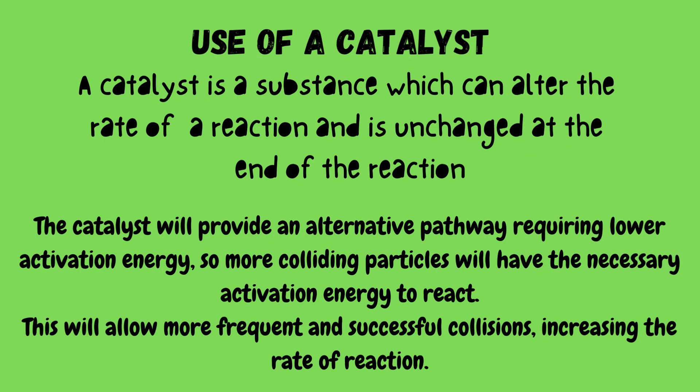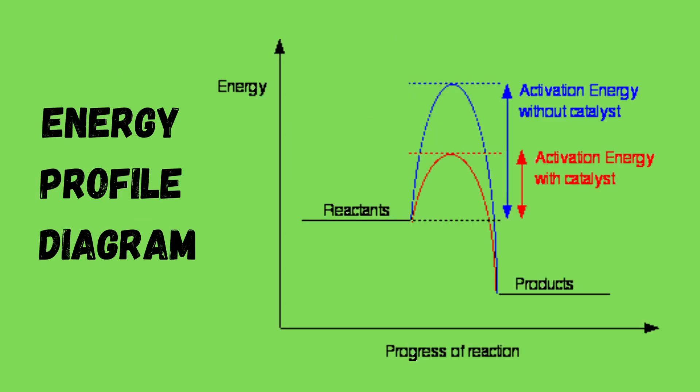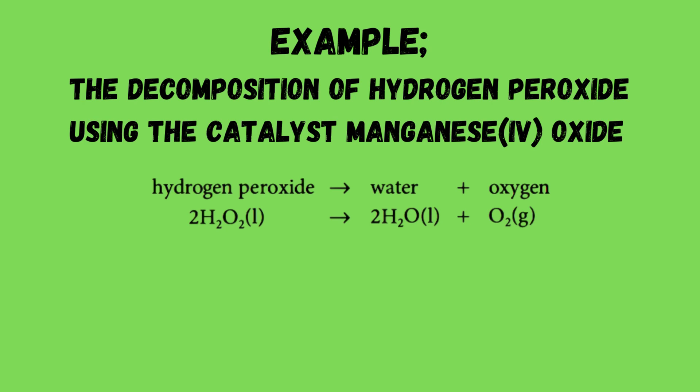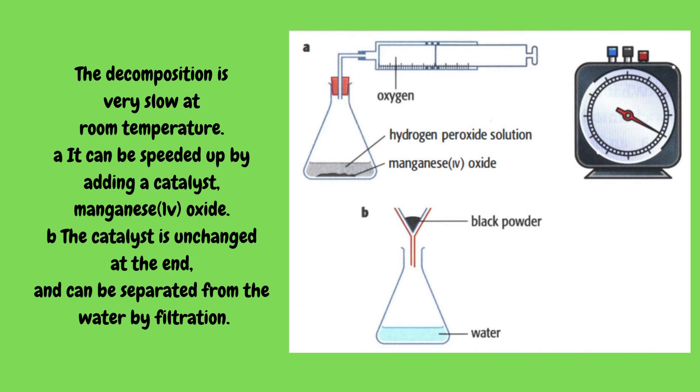The next factor is a catalyst. A catalyst is a substance which can alter the rate of a reaction and is unchanged at the end of the reaction. The catalyst provides an alternative pathway requiring lower activation energy, so more colliding particles will have the necessary activation energy to react. This allows more frequent and successful collisions, increasing the rate of reaction. An energy profile diagram shows the difference in activation energy with and without a catalyst. For example, the decomposition of hydrogen peroxide using the catalyst manganese(IV) oxide: hydrogen peroxide decomposes to form water and oxygen. The decomposition is very slow at room temperature but can be speeded up by adding manganese(IV) oxide. The catalyst is unchanged at the end and can be separated from the water by filtration.